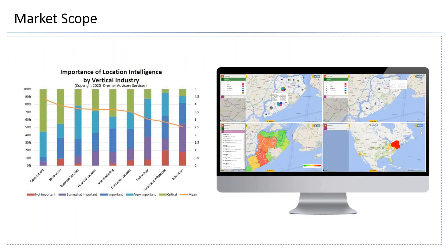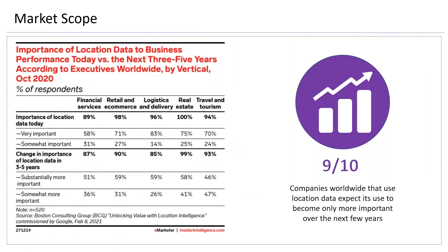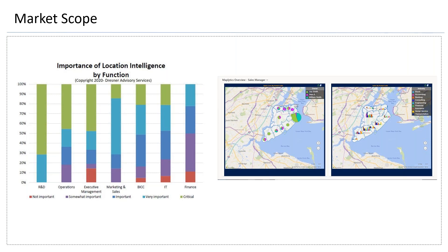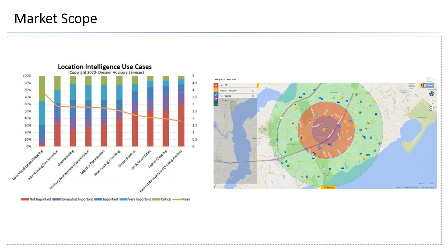Moreover, in any business, location intelligence is used by people across various job functions — not just C-level leaders, but also people in R&D, operations, marketing, sales, and many other functions. They utilize location intelligence in their day-to-day work. Use cases like data visualization, logistics, fleet routing, and tracking are of great importance across organizations, and Maplytics is one such solution that helps fulfill all of these use cases.